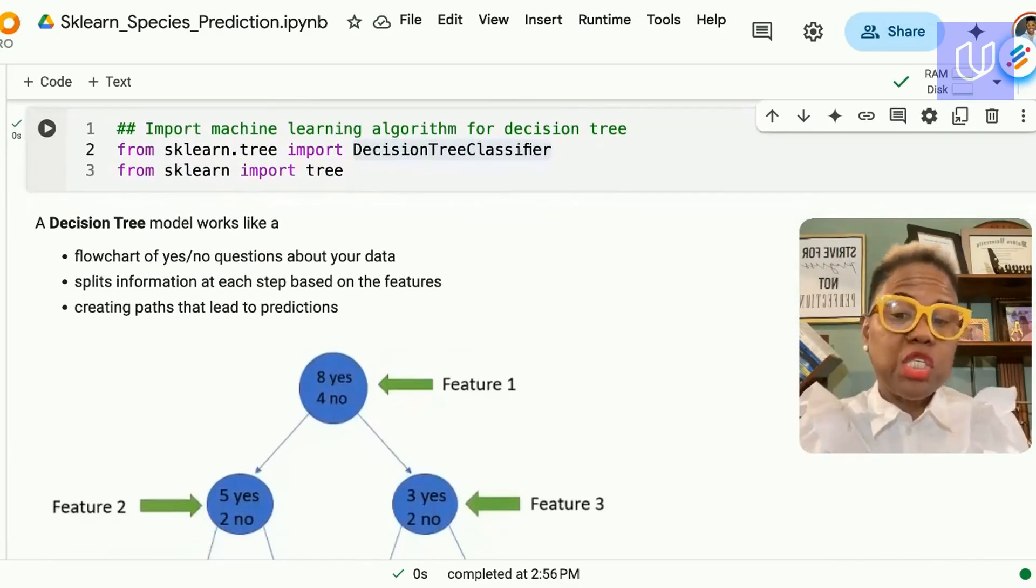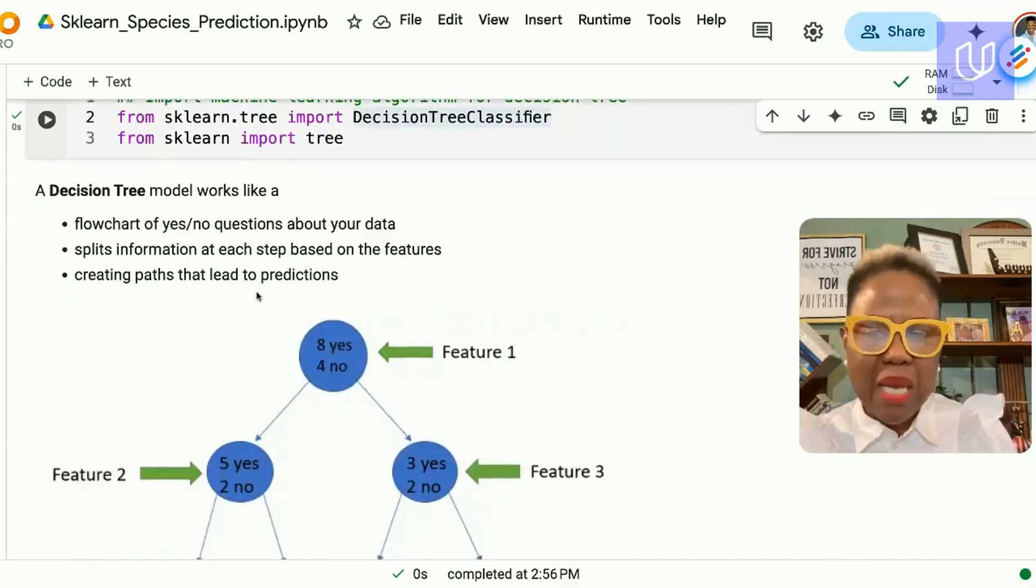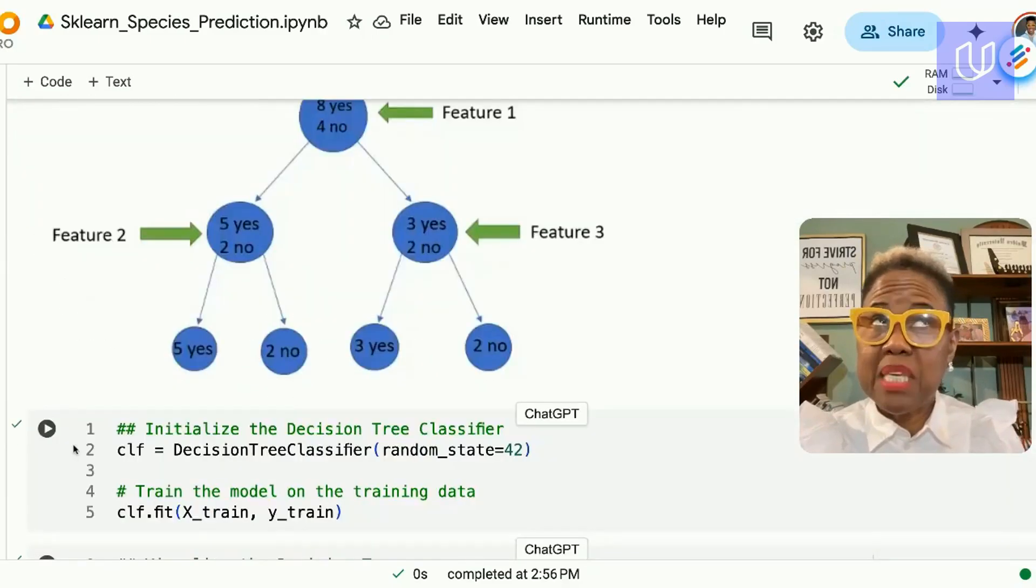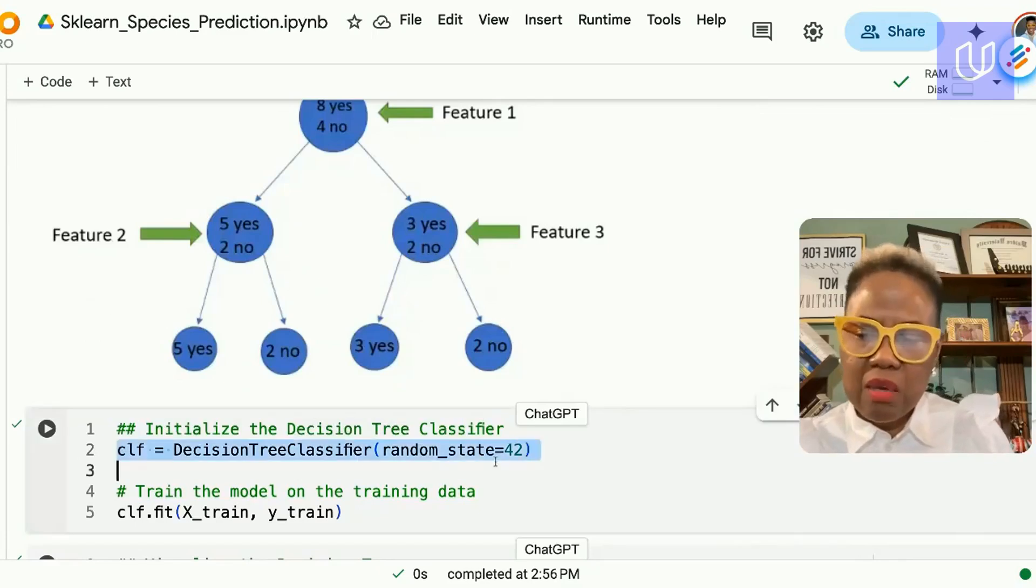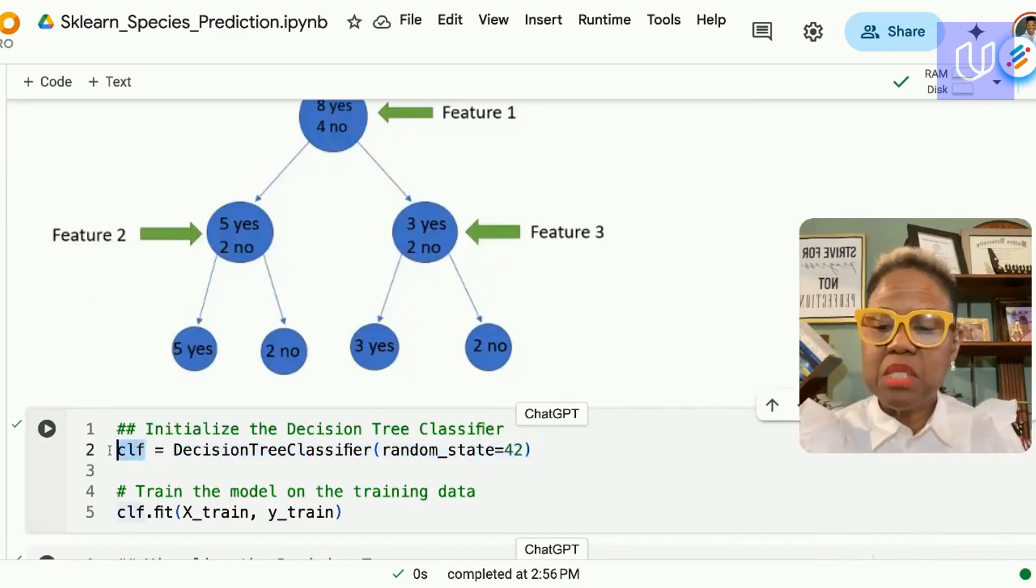So each observation, each flower is examined and assigned to a certain category and it keeps doing that creating a path that eventually leads to a final prediction. Once we have imported the decision tree classifier we can instantiate a version of that model and assigning it to the variable name clf and we're to use that to train or to fit the training data x_train and y_train.